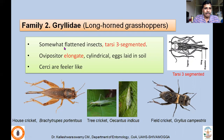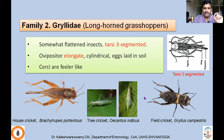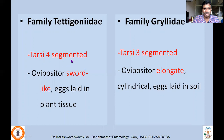Family Gryllidae — crickets. These are somewhat flattened insects. Tarsi are three-segmented, unlike Tettigoniidae where tarsi are four-segmented. The ovipositor is elongate and cylindrical; eggs are laid in soil. Cerci are filiform — elongated, like antennae. To differentiate Family Tettigoniidae from Gryllidae: tarsi four-segmented versus three-segmented, and ovipositor sword-like versus elongated cylindrical. Two species under Gryllidae: house cricket Acheta domesticus, tree cricket Oecanthus indicus, and field cricket Gryllus campestris.